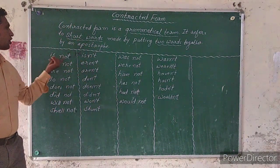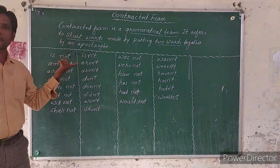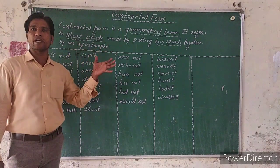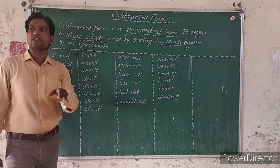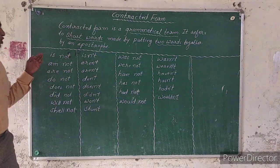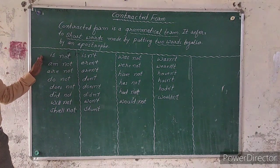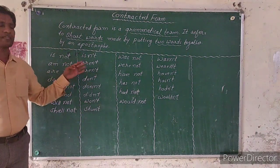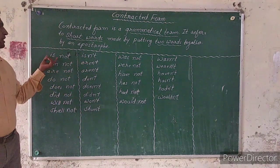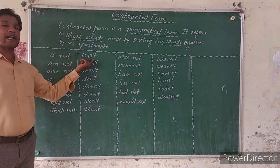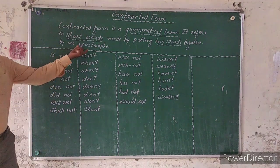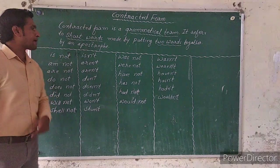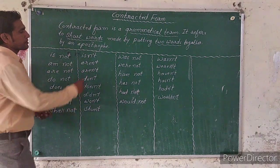We put the two different parts together — the word 'is' or 'not' — with an apostrophe, joining them together. For example, 'is not' — what do we call this technically? It becomes 'isn't'.